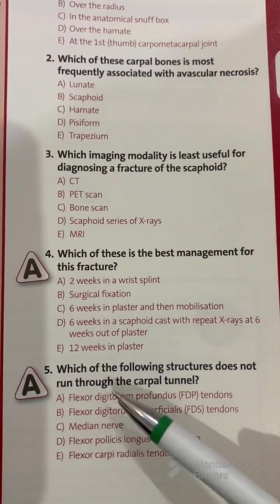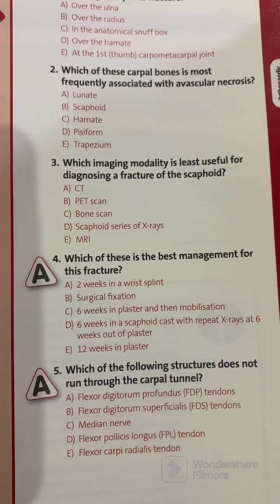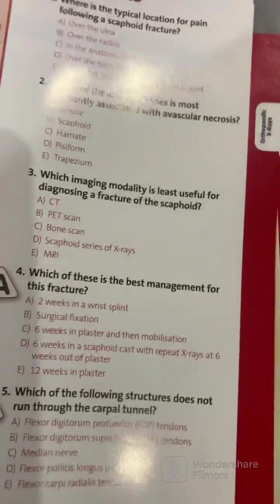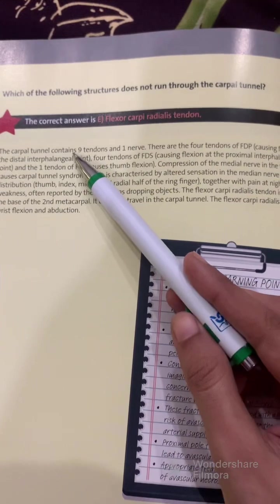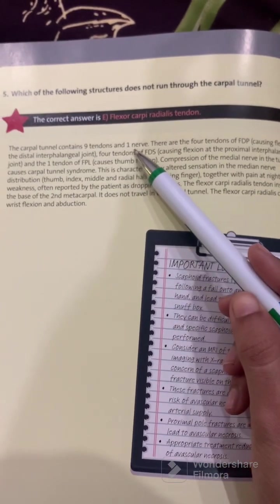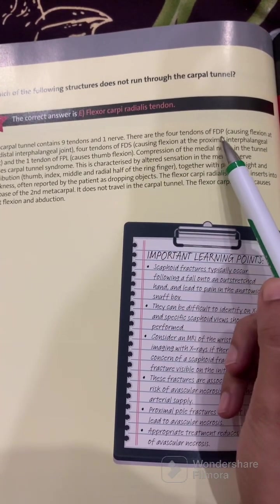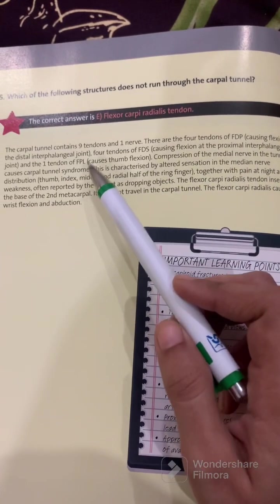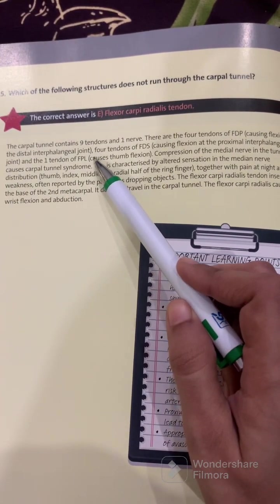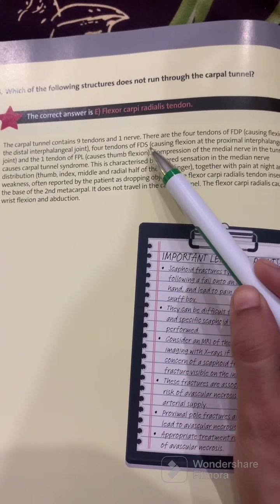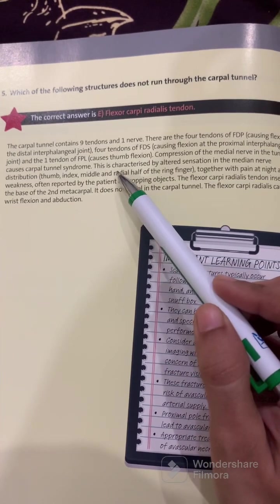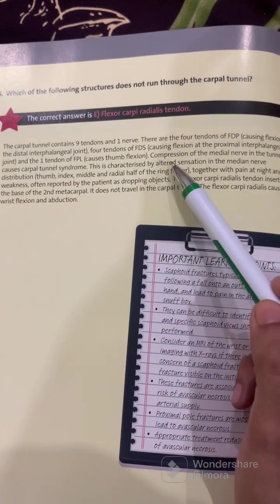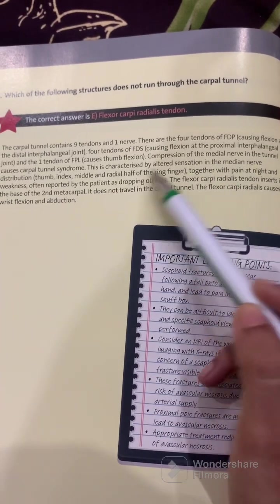Question five: which of the following structures does not run through the carpal tunnel? The correct answer is the flexor carpi radialis tendon. The carpal tunnel contains nine tendons and one nerve: four tendons of FDP causing flexion at the distal interphalangeal joint, four tendons of FDS causing flexion at the proximal interphalangeal joint, and one tendon of FPL which causes thumb flexion.